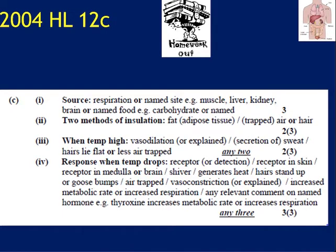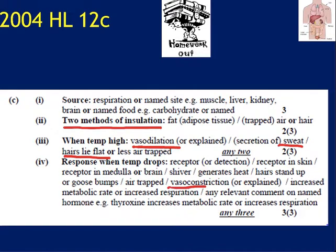Note here two methods of insulation: the fat layer, the adipose layer, and the fact that you can trap air, or even the fact that you have hair. When temperature is high: vasodilation, sweating, and hair lying flat. When temperature drops: vasoconstriction, piloerection — hair standing up — air is trapped, and we had the thyroxine comment.